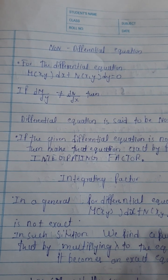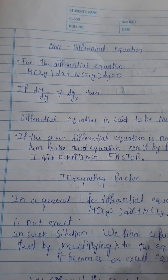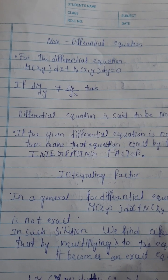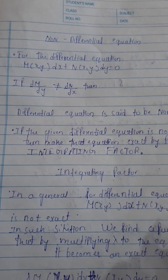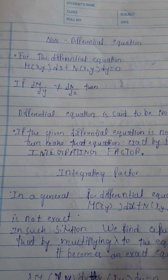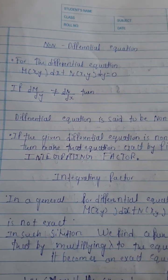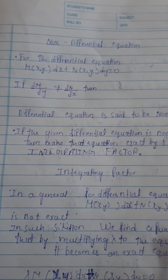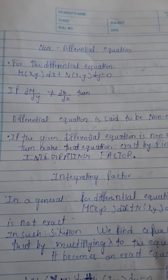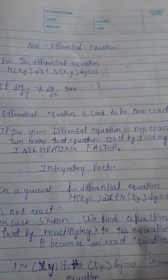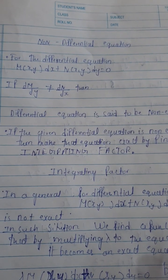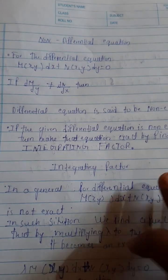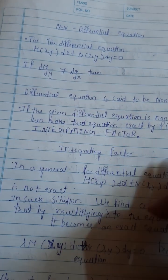In this video we will learn about non-exact differential equations. For the differential equation M(x,y)dx + N(x,y)dy = 0, if ∂M/∂y is not equal to ∂N/∂x, then the differential equation is said to be non-exact. If the given differential equation is non-exact, we make the equation exact by finding the integrating factor.